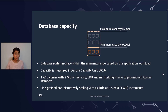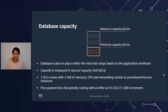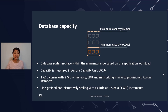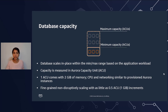We measure capacity in Aurora Capacity Units, or ACUs. One ACU comes with 2 GB of memory, and for CPU and networking it's similar to what you get with provisioned Aurora instances. We make sure that we scale the database in fine-grained increments so it follows your workload closely — we can scale in as little as 0.5 ACU increments. For example, if your workload is at 16 ACUs, we can jump to as small as 16.5 or make bigger jumps depending on your workload.